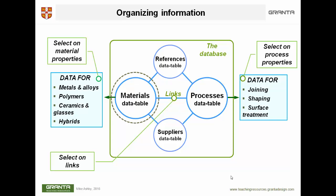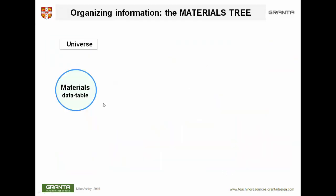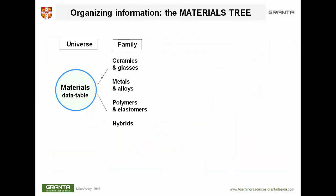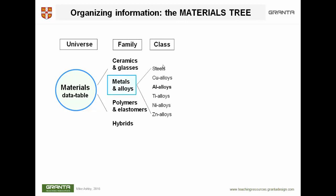Let's see what's in there. We call it the material universe. The first level opens folders for the families: ceramics and glasses, metals and alloys, polymers, elastomers, and hybrids. If we open one of these — the metals folder, say — we find the classes: steels, copper, aluminum, and so forth. Open one of these and we find the members of the aluminum alloy class.